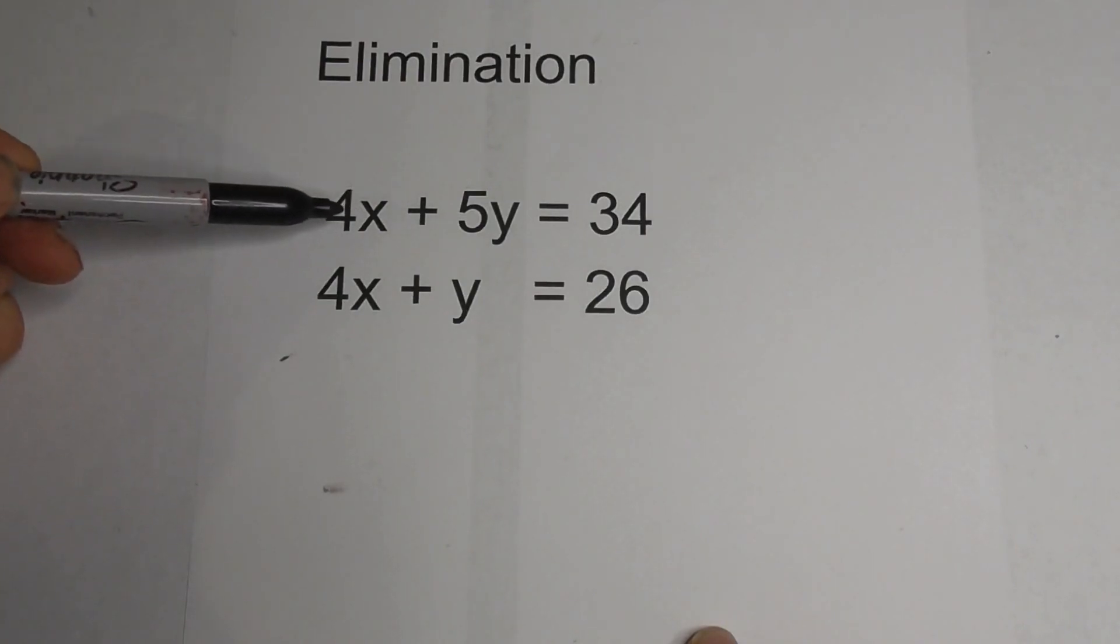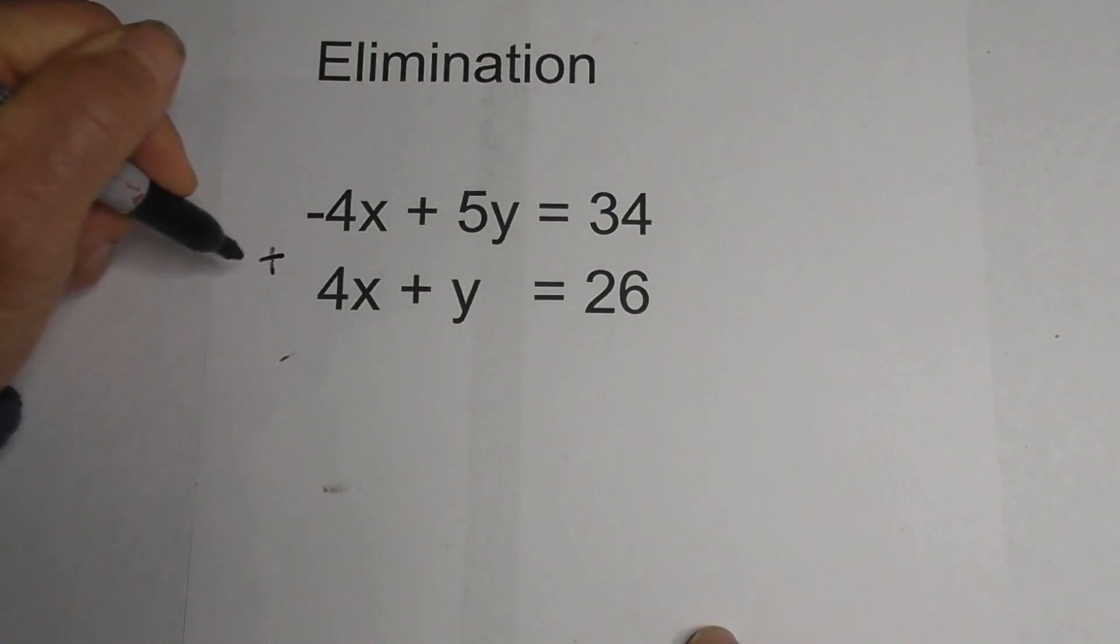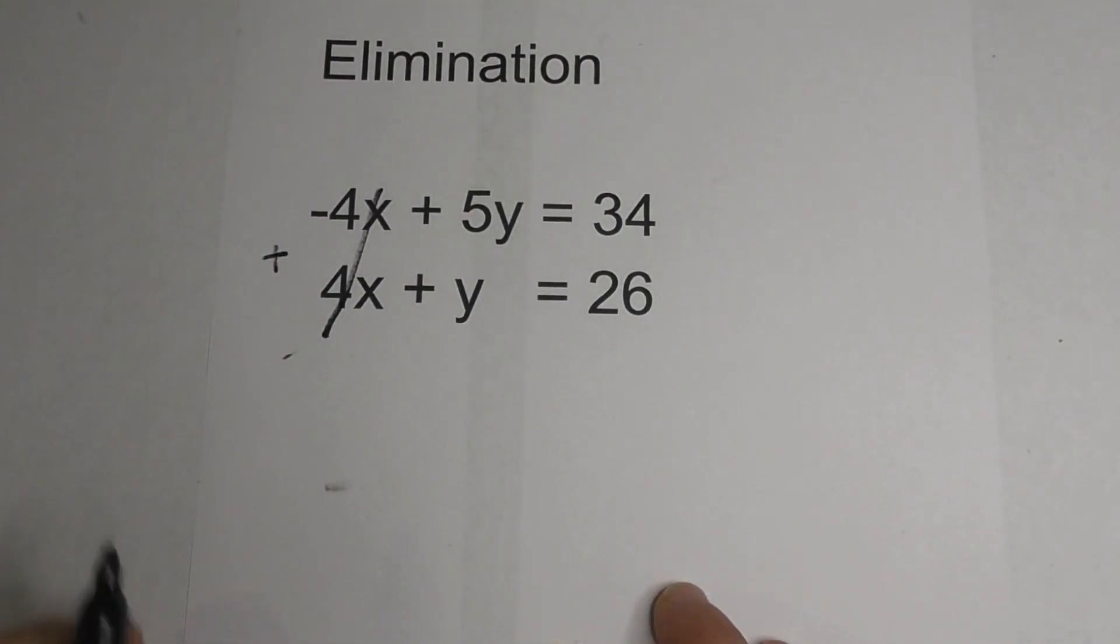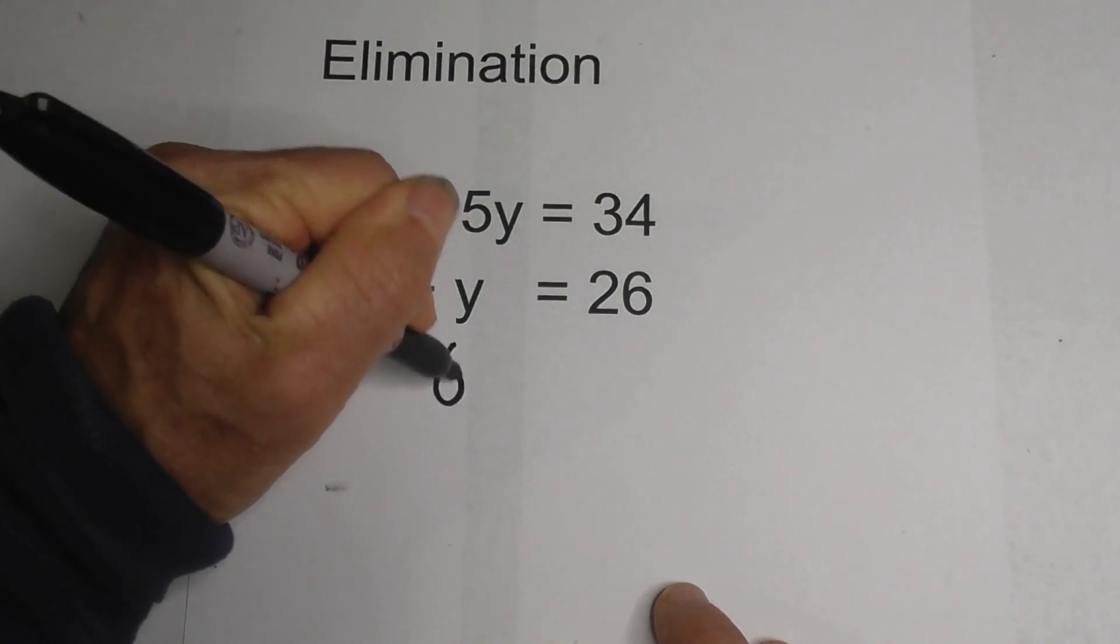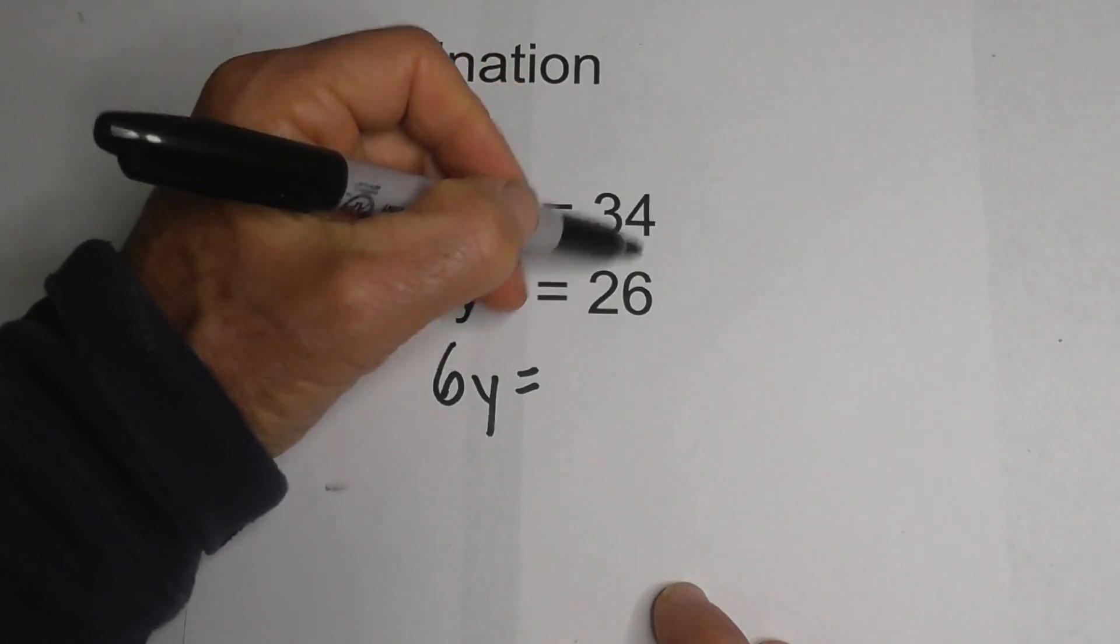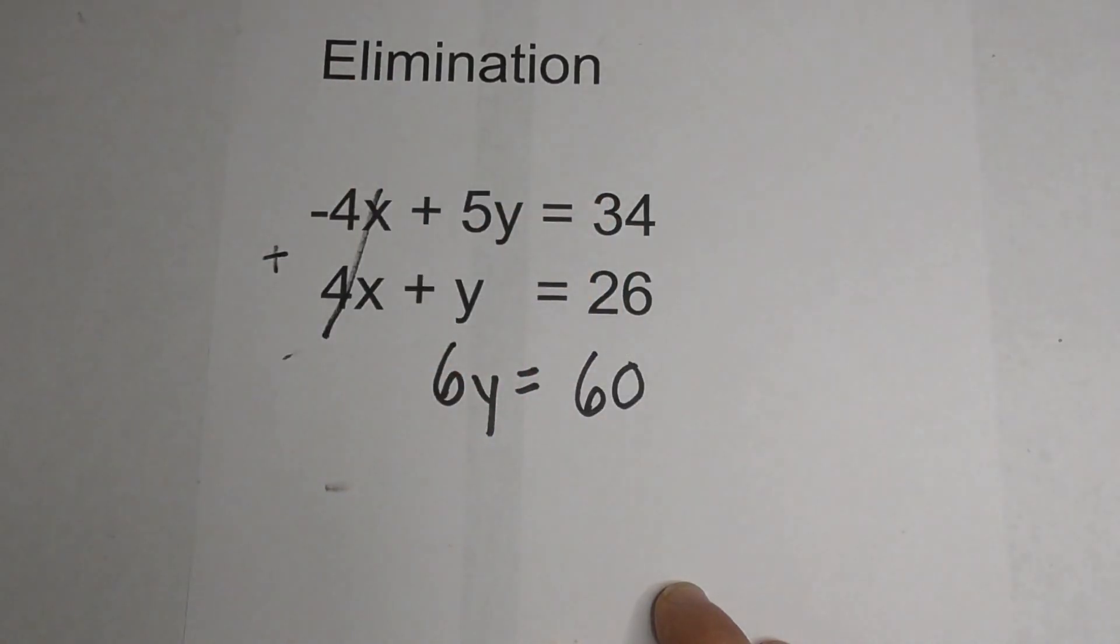We know that we want to cancel out either one of the x's or the y's. And we have a negative 4x and a positive 4x. And if we add the two equations these are going to cancel. So we're left with 6y equals, remember we're adding, and 34 and 26 is 60.